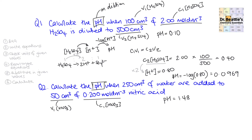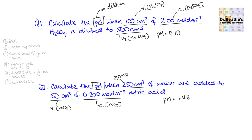For the second question, we're given something slightly different. The 250 cm³ hasn't been underlined yet because it has been added to 50 cm³. We need a manipulation: V2, the final solution volume, is 250 plus 50 because you're adding them together to make the new volume. That gives us 300 cm³ as the new V2.